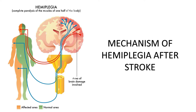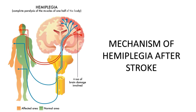The most common cause of hemiplegia is stroke, which damages the corticospinal tracts in one hemisphere of the brain. Other causes of hemiplegia include trauma, spinal cord injury, brain tumors, and brain infections.